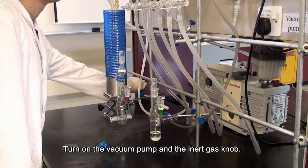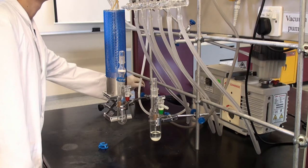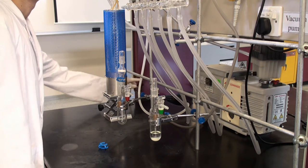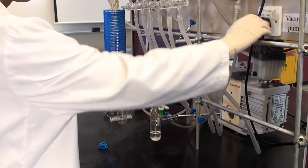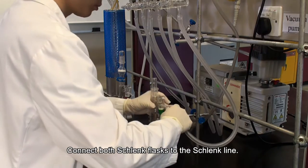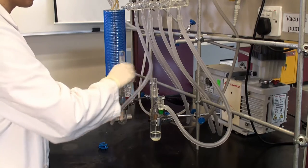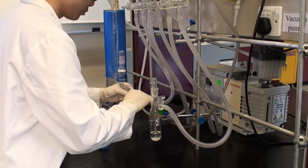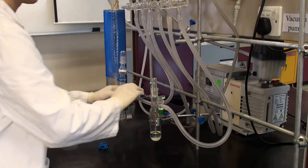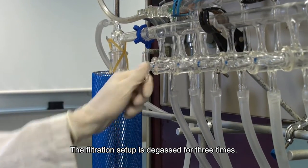Turn on the vacuum pump and the inert gas knob. Connect both Schlenk flasks to the Schlenk line. The filtration setup is degassed for three times.